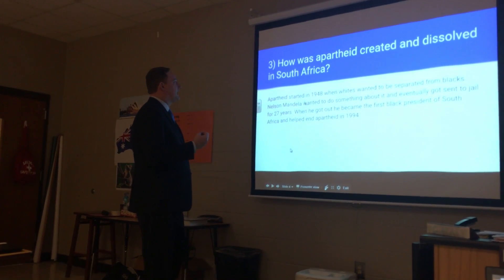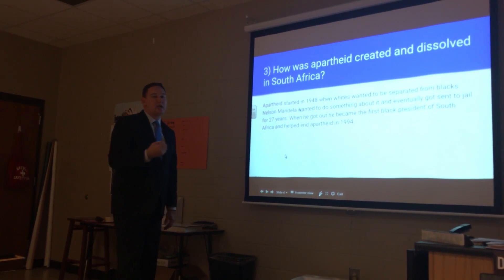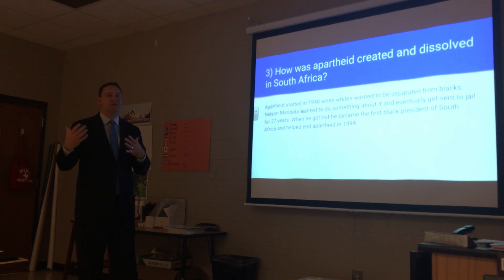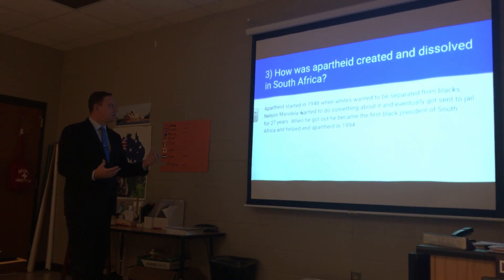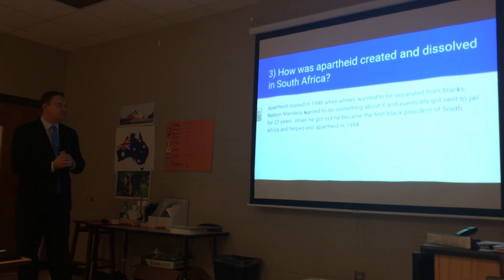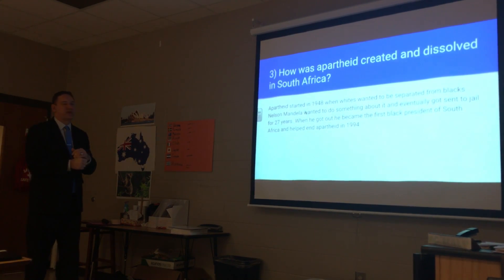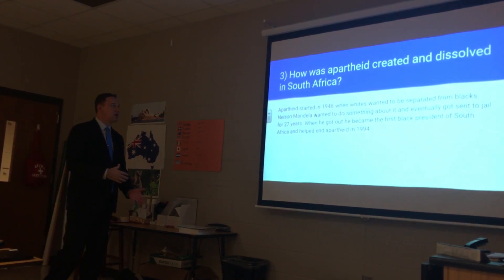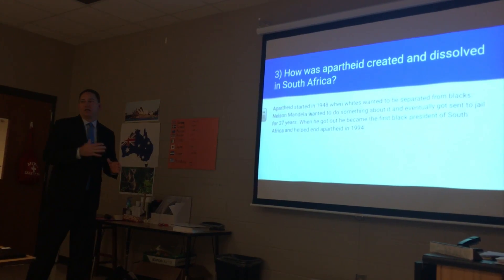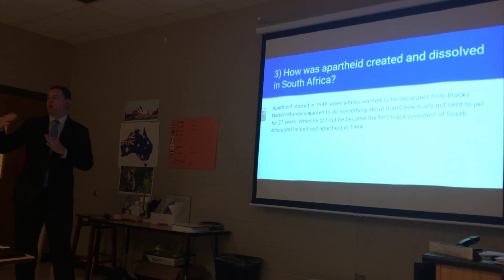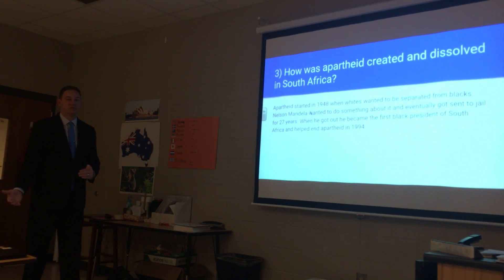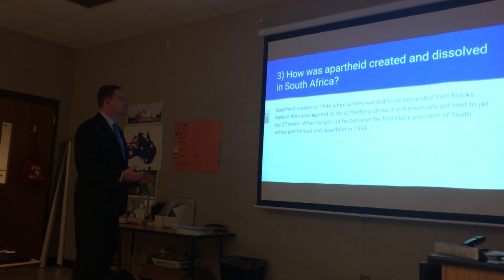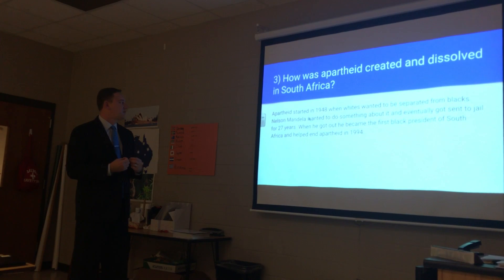Question three talks about apartheid. What was apartheid? How was it created, and how was it dissolved? Apartheid started in 1948, when the South African white population, which was of British and Dutch descent, wanted to have legal segregation. Apartheid was the legal segregation, or separation, of races.